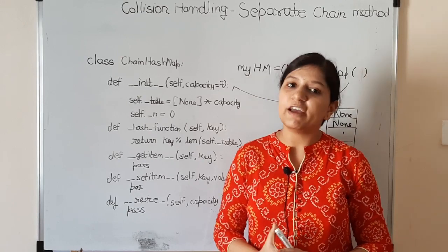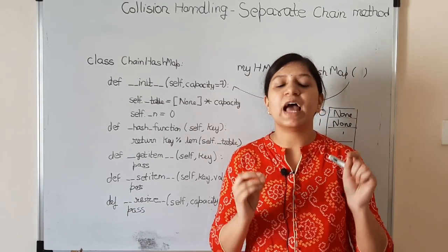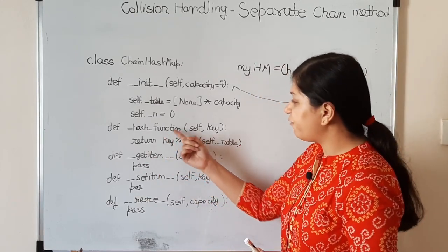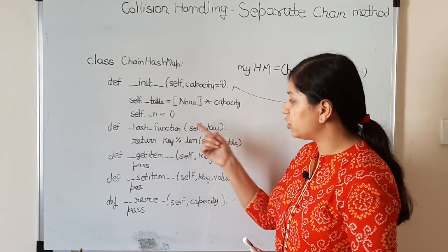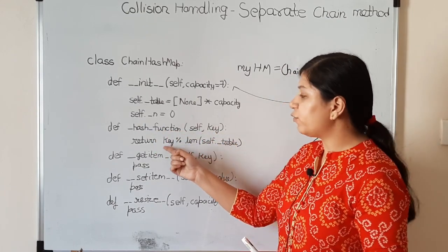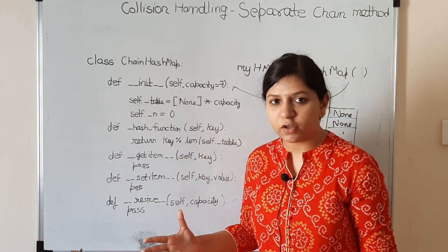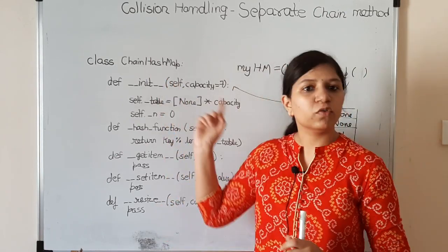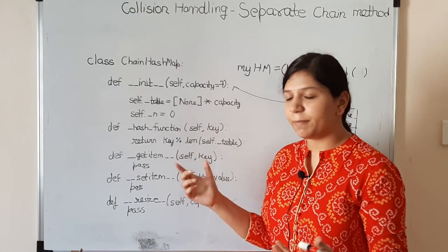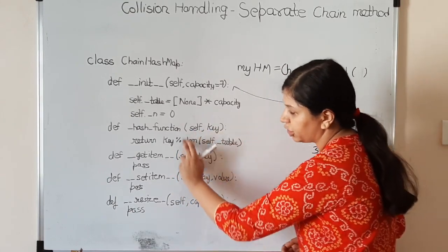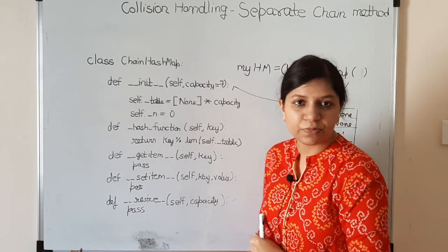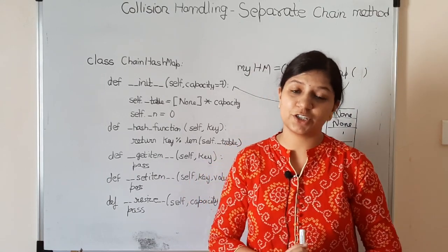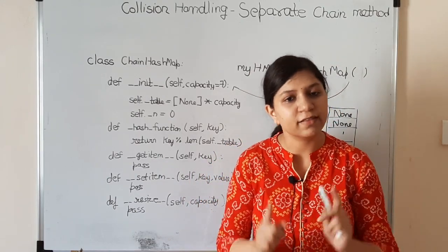Next, let's talk about the hash function. Every time a key-value pair comes in, we first hash its key to find its hash value. We define a hash function that takes a key and returns the hash value. We're using a very simple hash function: key modulo capacity, i.e., key % len(hash_table). So these two things — the constructor and hash function — are discussed. Now let's look at the important functions: __getitem__, __setitem__, and resize.